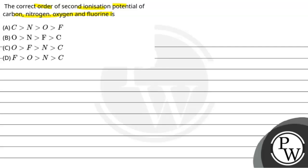Let's discuss the key concepts. First of all, second ionization potential — what do we have to do? When we have one electron already in the subshell, after the first ionization potential comes the second ionization potential. The second electron you have to remove from the outermost subshell after the removal of one electron. That is the second ionization potential.